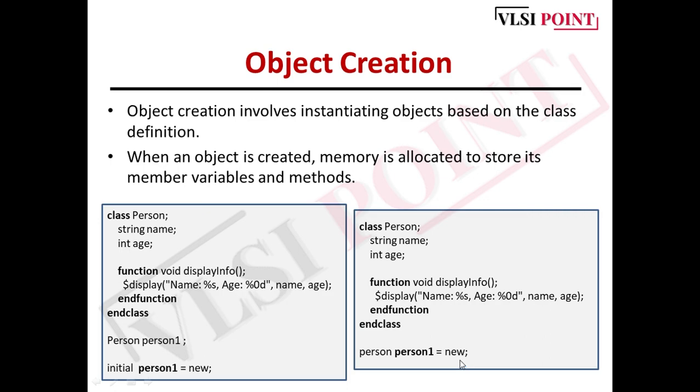By default, the handle has a null pointer. Here the 'new' allocates the memory. The new which we've written here, person1 equals new - this new allocates the memory and this is how we create objects. We've seen two different methods for object creation.